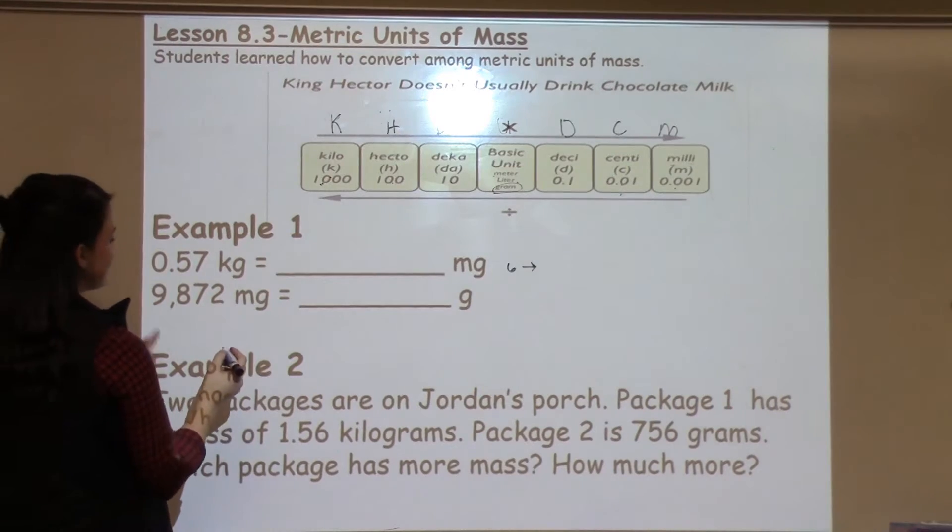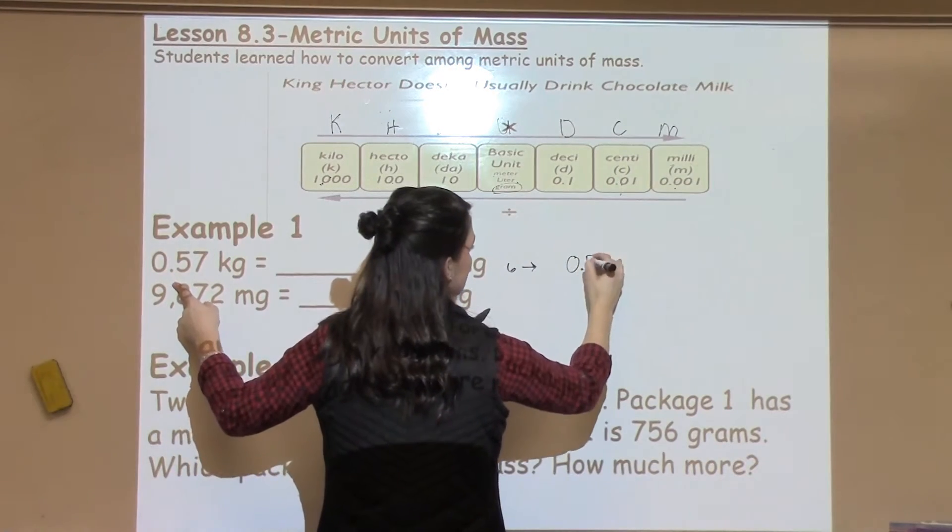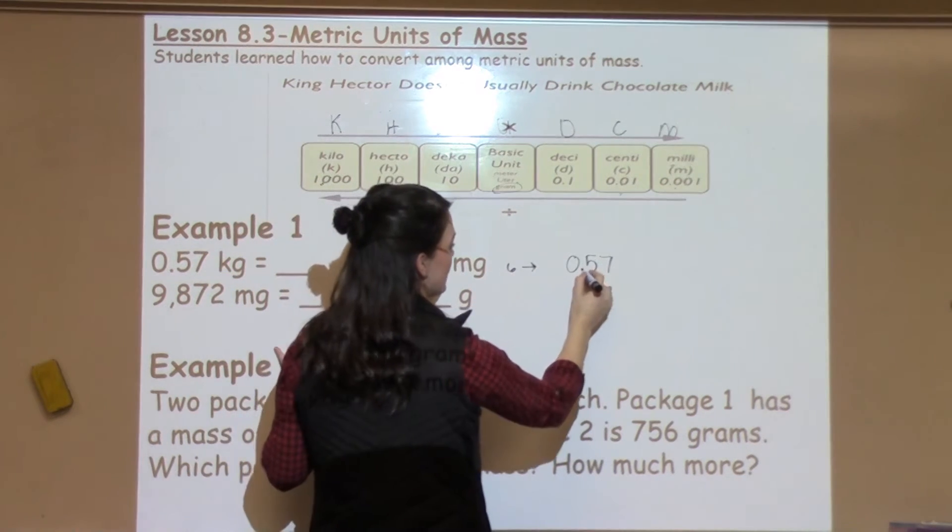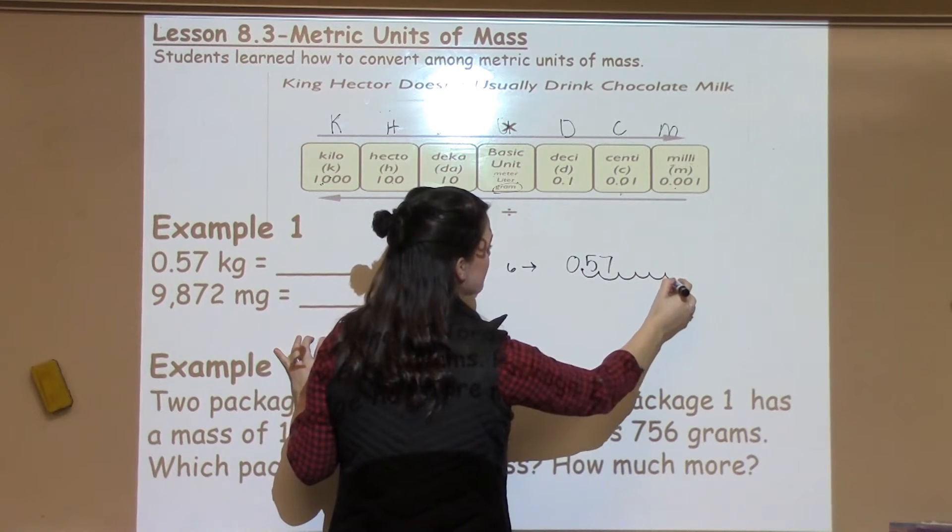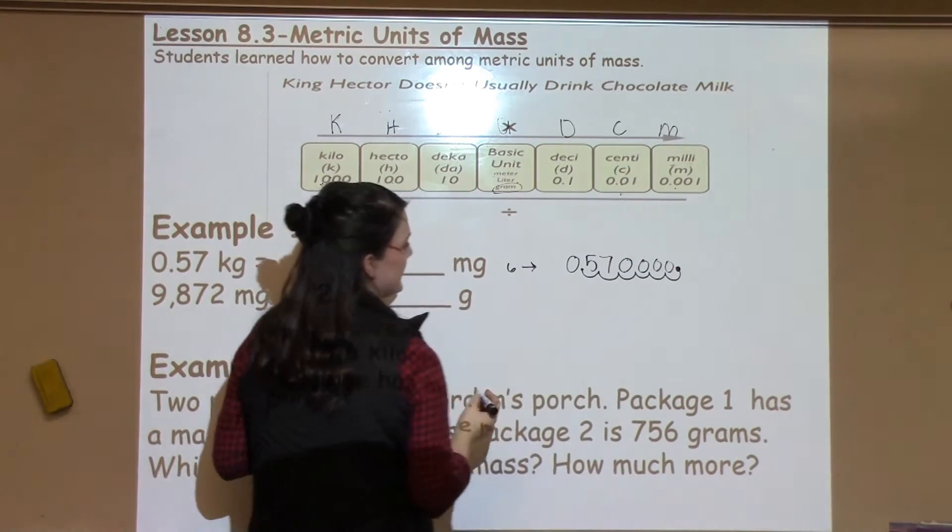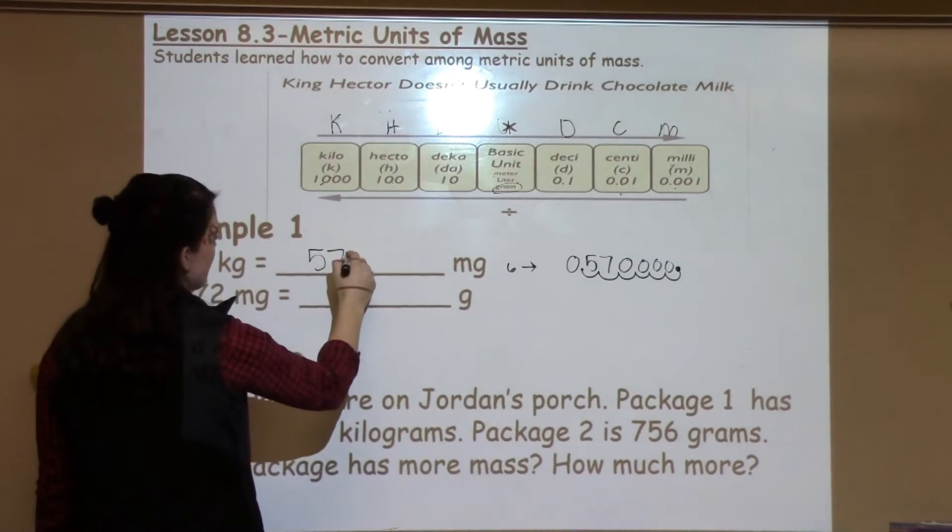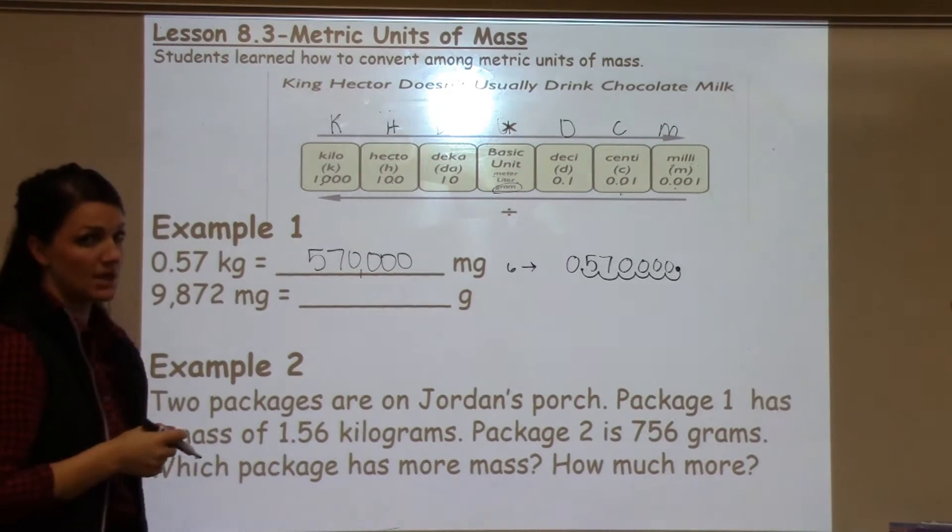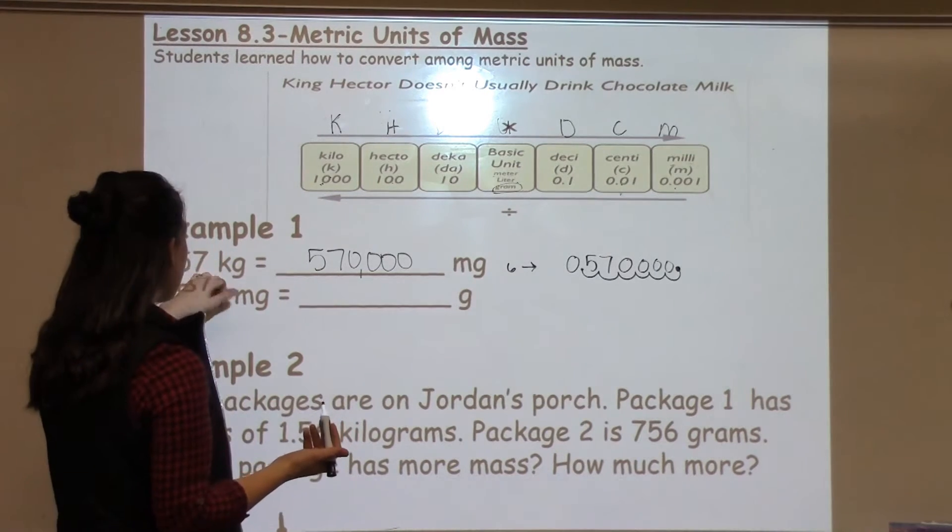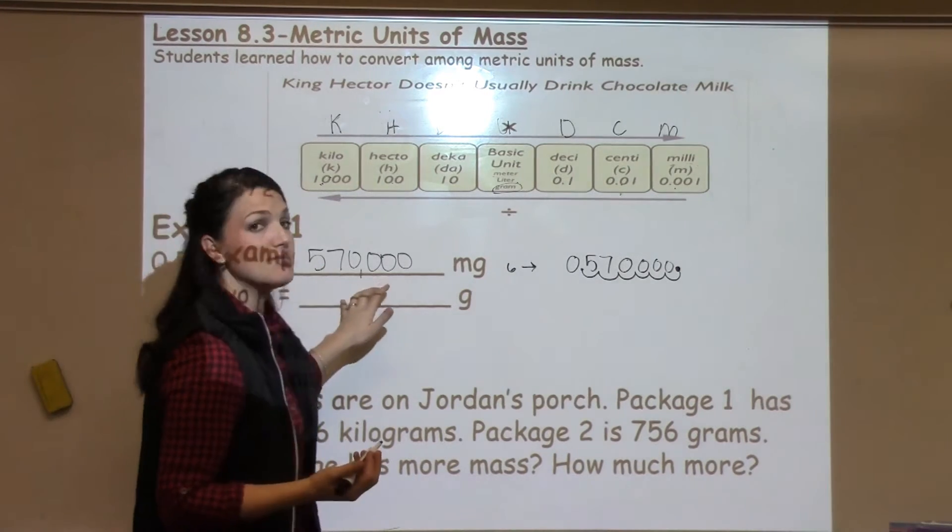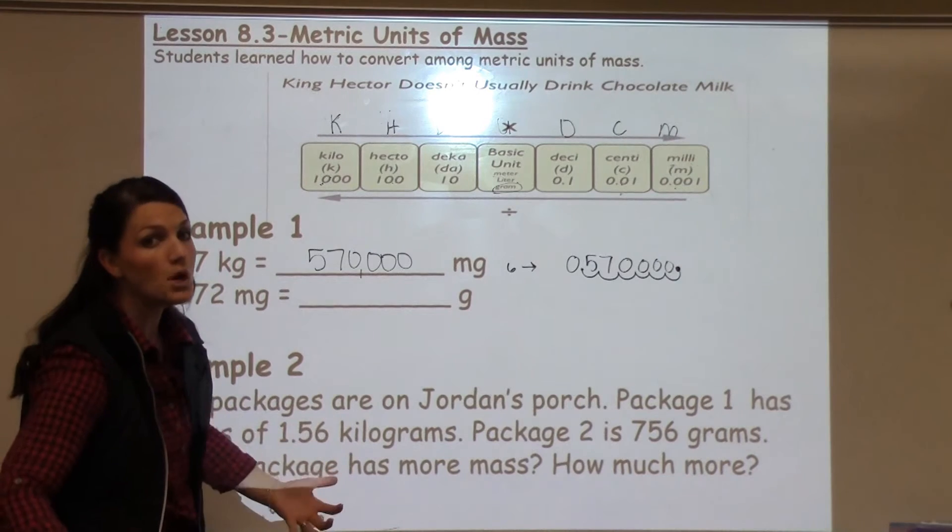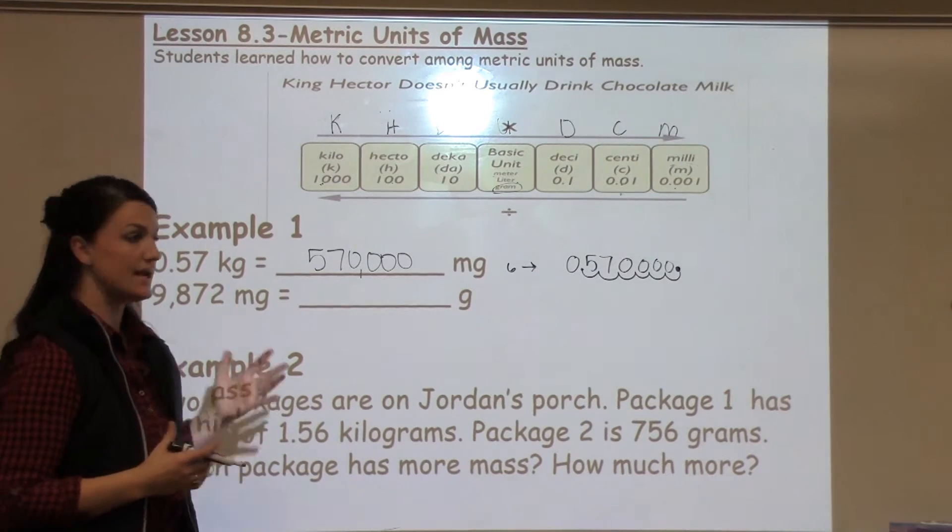Now all I need to do is take the number that I have and move the decimal point the direction and the spaces that I wrote down in my notes. So I'm going to move it six places to the right: one, two, three, four, five, six, and place my decimal point at the end and then fill in any zeros. So my final answer becomes 570,000 milligrams. And then you're going to want to encourage a student to stop and ask themselves if it makes sense. If I have this many kilograms, should my number for milligrams be that much larger? And the answer would be yes, because I would need more milligrams to equal the same amount of a larger unit, kilograms.